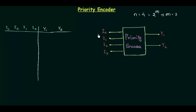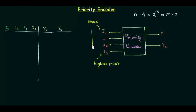Before moving to the truth table, let us first set the priority for the inputs. I assume i0 has the lowest priority and i3 has the highest priority. So from i0 to i3 the priority increases — i0 has the lowest, then i1, then i2, then i3 has the highest priority.